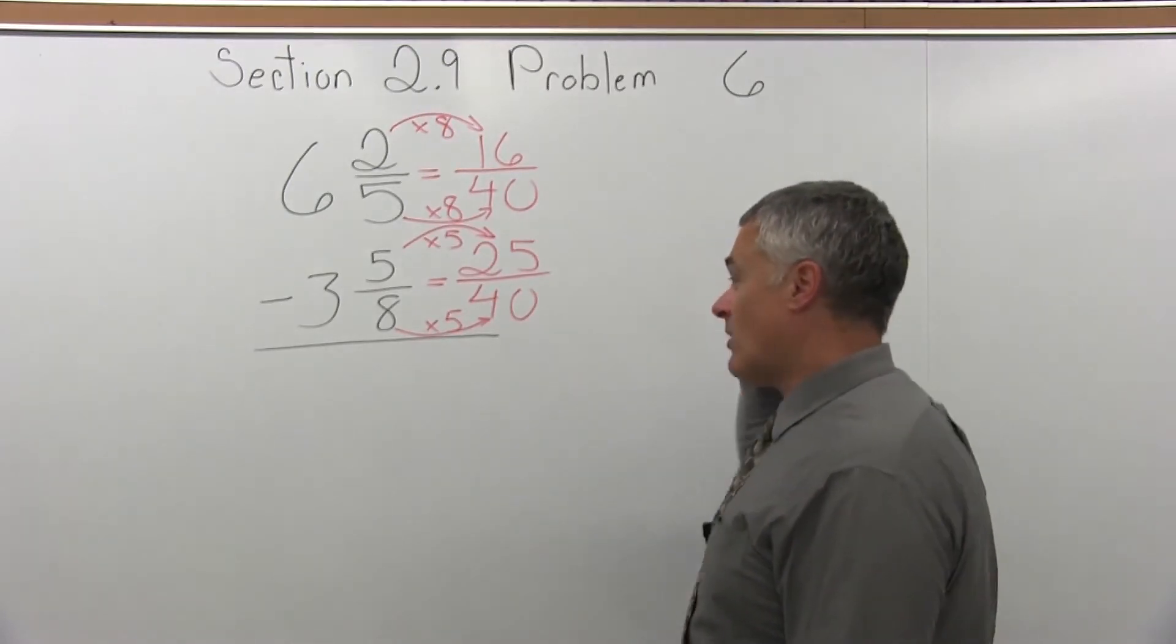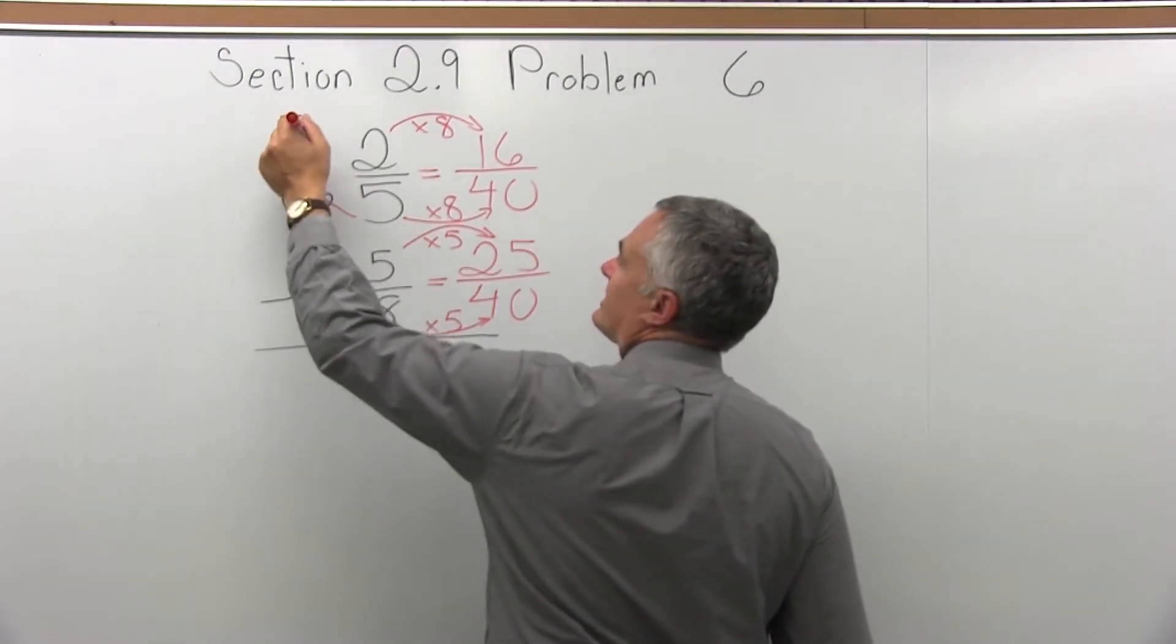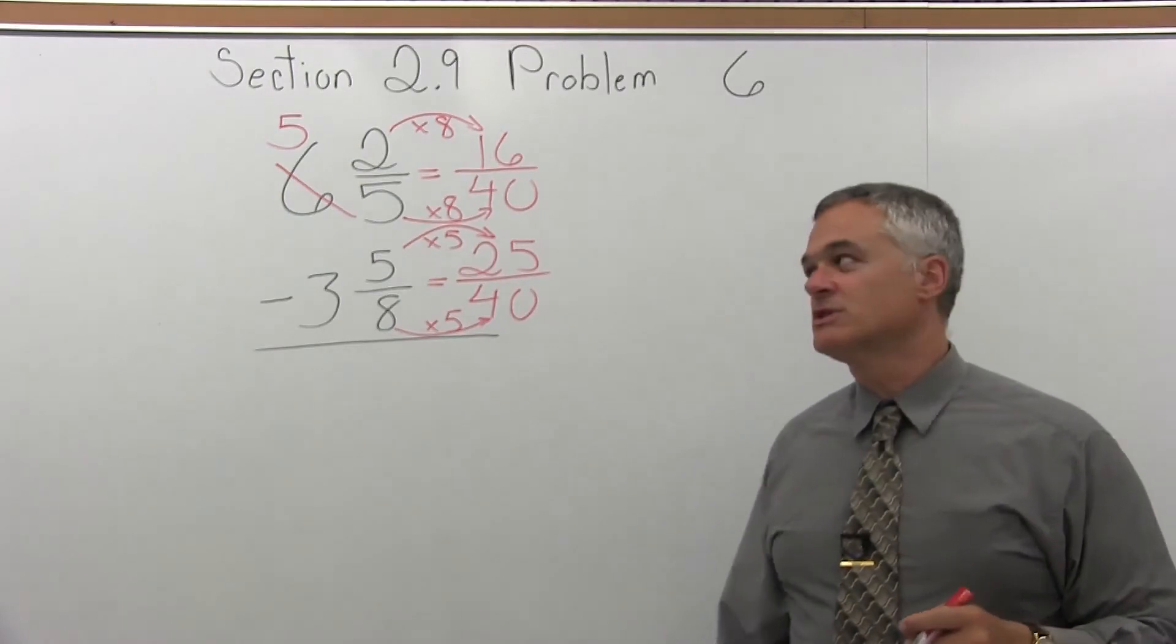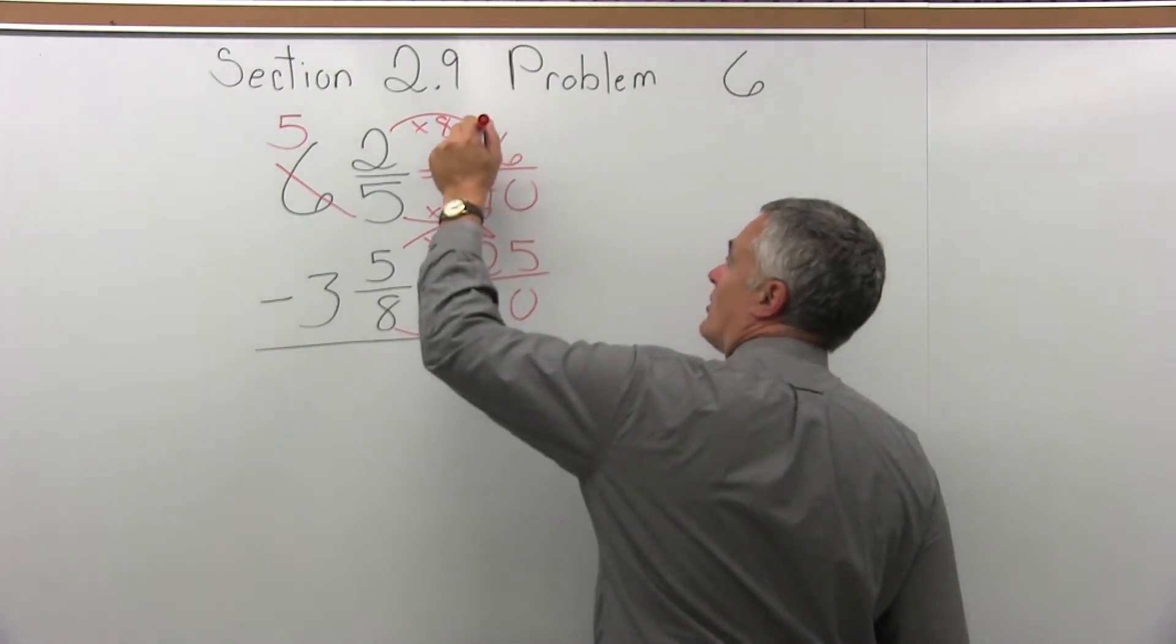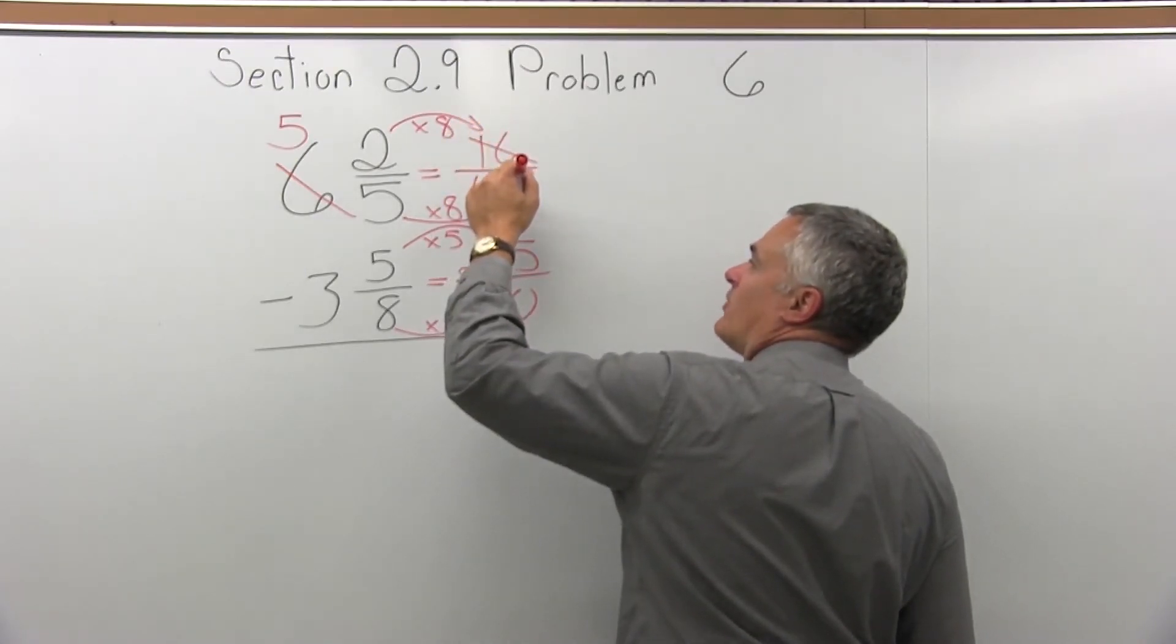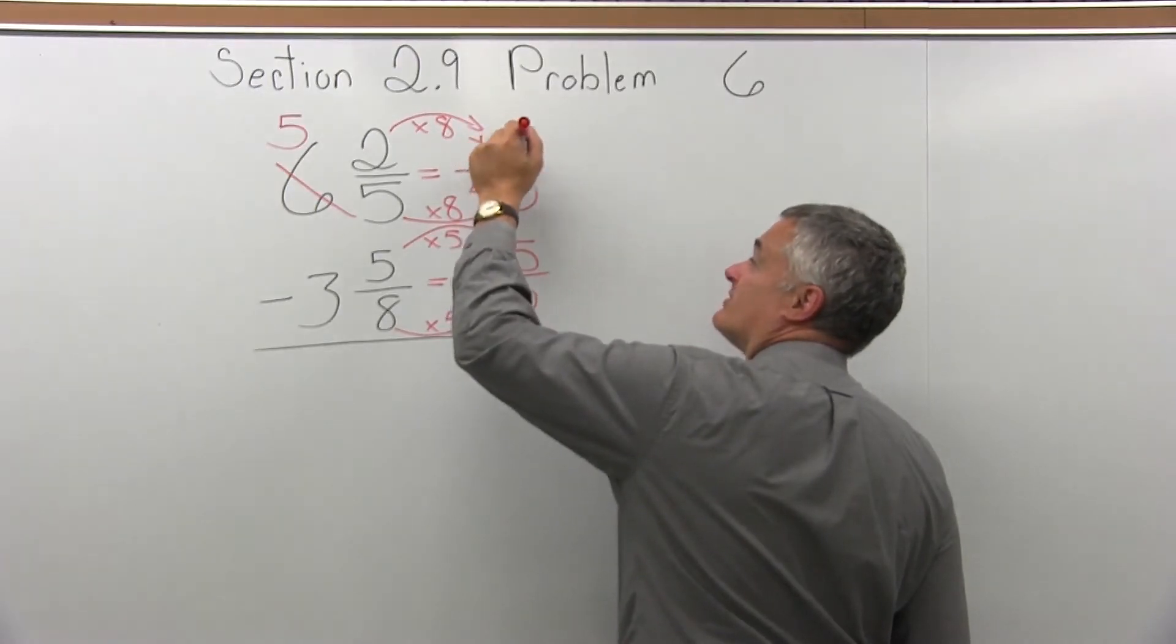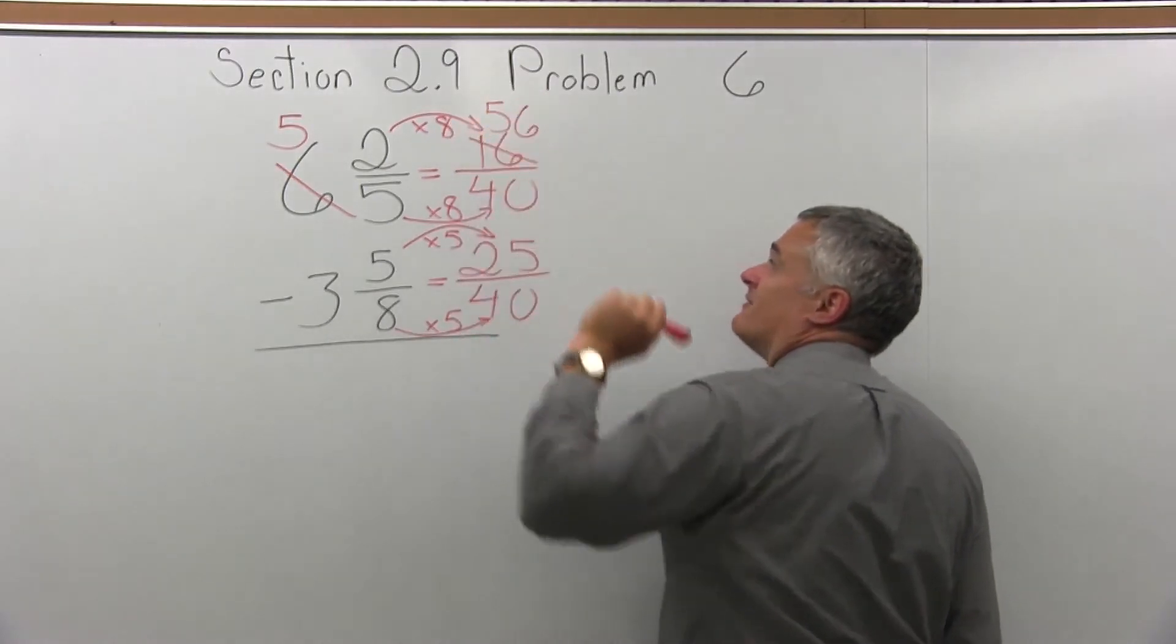So to borrow, what we have to do is go to the whole number that's in front of the upper fraction, cross it out and reduce it by 1. It was a 6, I'm going to cross out that 6, reduce it down to a 5. Then I cross off the numerator of 16, make a new numerator by adding the denominator of 40 to the old numerator. So the denominator of 40 plus the old numerator of 16. 40 and 16 more makes 56.